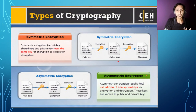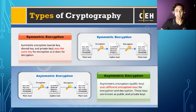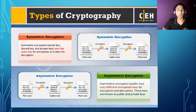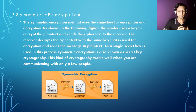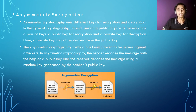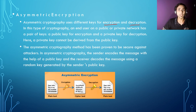As we discussed in the last video, there are two types of cryptography: symmetric encryption and asymmetric encryption. Symmetric encryption uses the same key for both encryption and decryption. Asymmetric encryption uses two different keys — a separate key is used for encryption and a separate key is used for decryption.